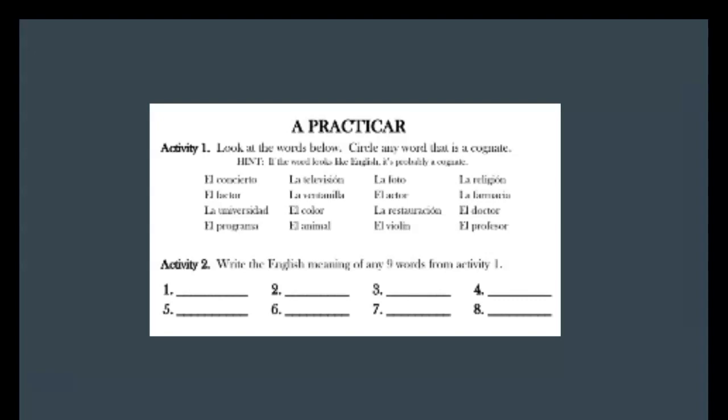In activity two, you're going to write the English meaning of any of those words from up above. So you're going to write the meaning, pick one, you can number them up above and then write the meaning of them. When you're done you can pause the video here and then when you're done we can jump down to activity three.